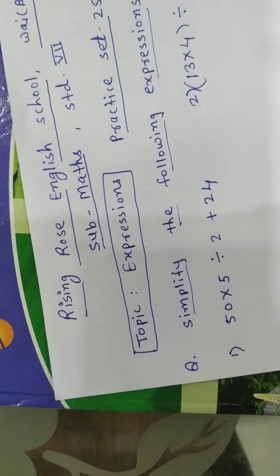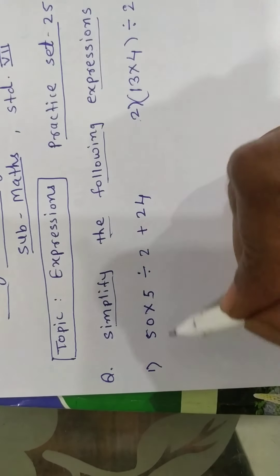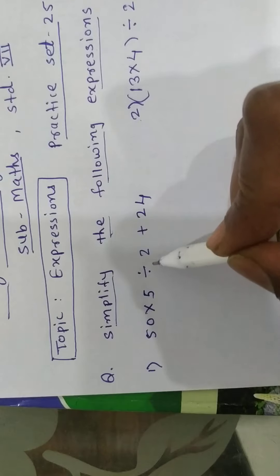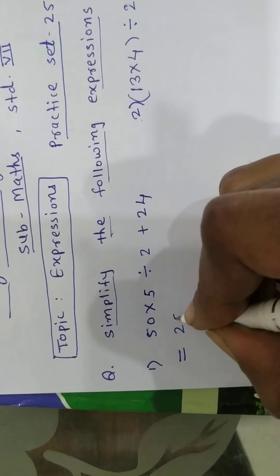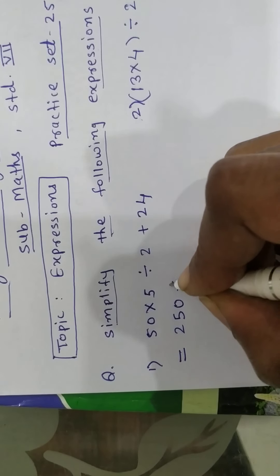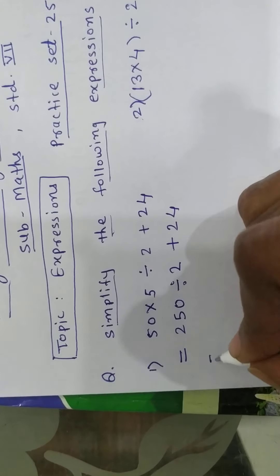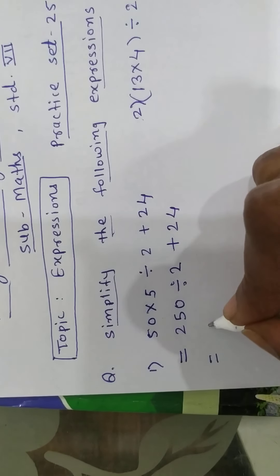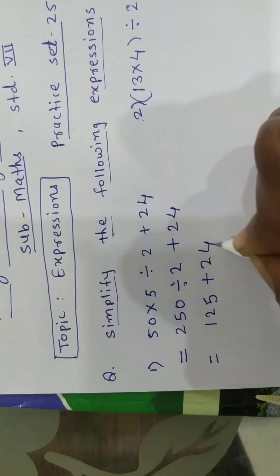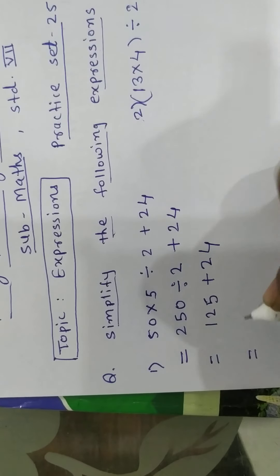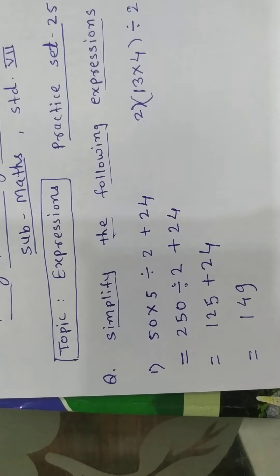Now look at — we are going to solve some examples. First: 50 into 5 divided by 2 plus 24. 50 into 5 is 250, so 250 divided by 2 plus 24. 250 divided by 2 means 125, plus 24 means 149. This is the answer.